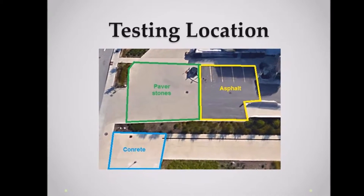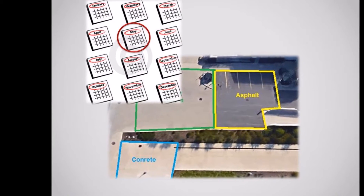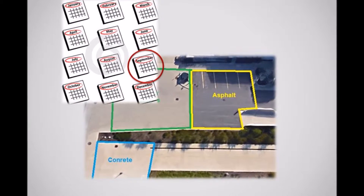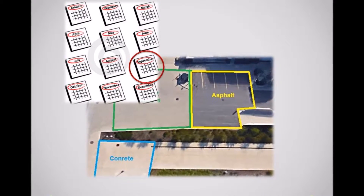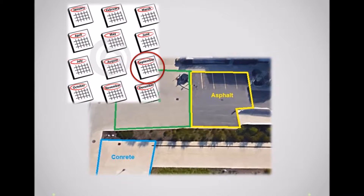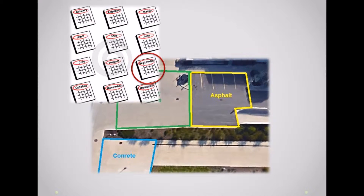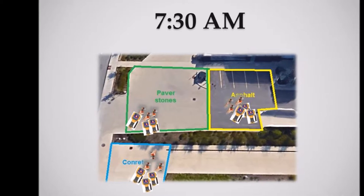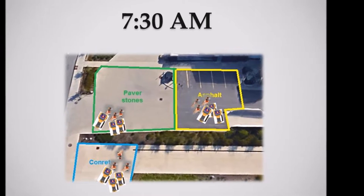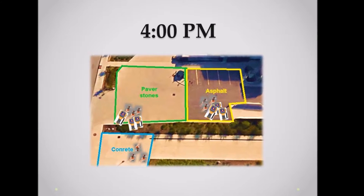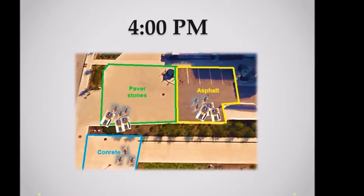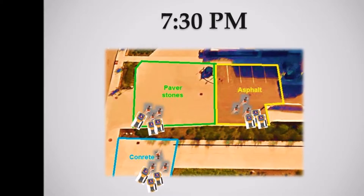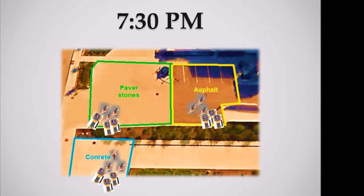The field testing takes place between the months of May to September on a bi-weekly basis, three times per testing session. The first test in the morning at 7:30am, followed by a test in the afternoon at 4pm, and finally one more in the evening at 7:30pm.